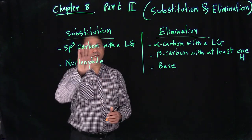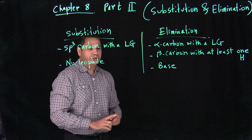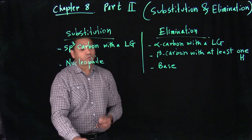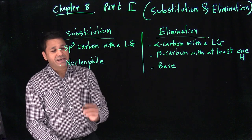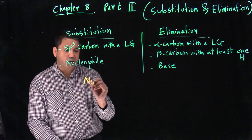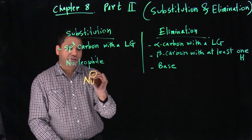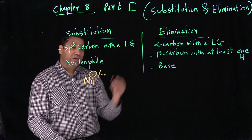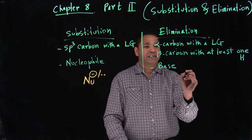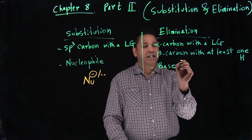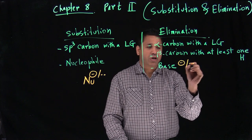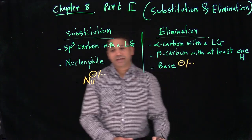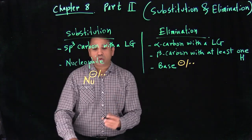There's one common thing between substitution and elimination: a nucleophile and a base. What's a nucleophile? Anything which has a negative charge or an electron pair. What is a base? A base is also the same thing — anything which has a negative charge or electron pair.